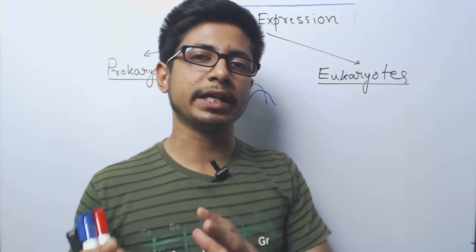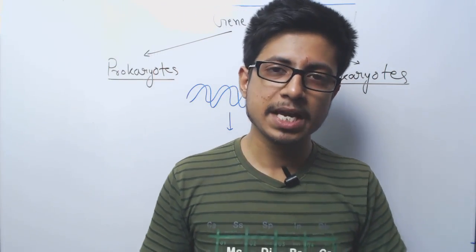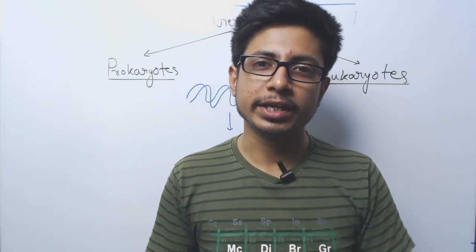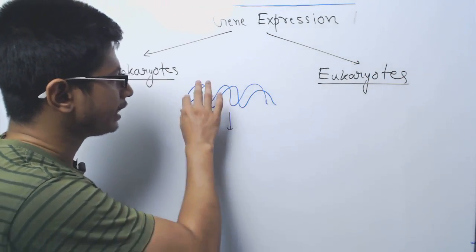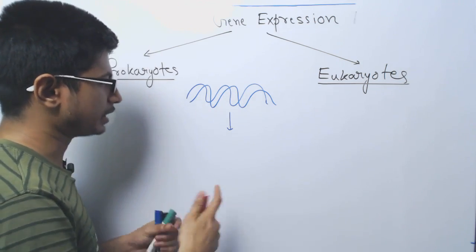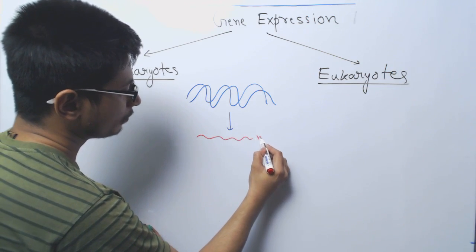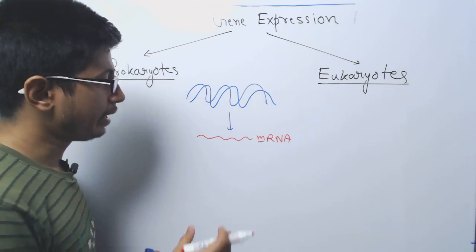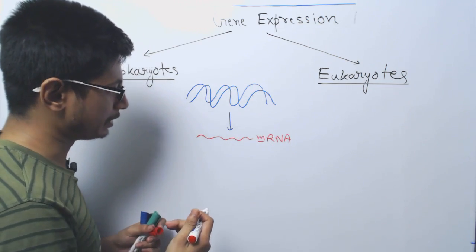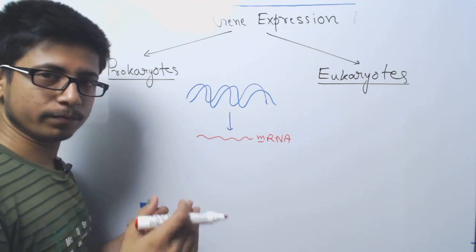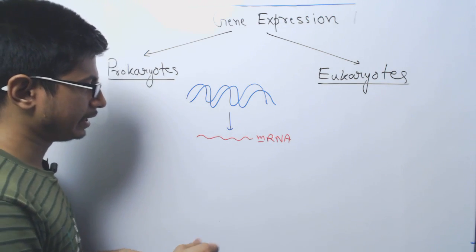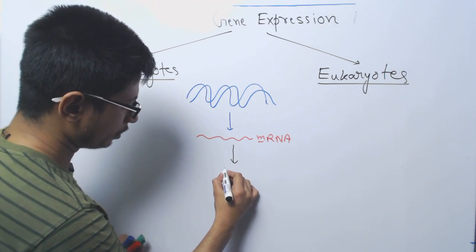To understand that, you need to know the general mode of gene expression. A gene is expressed when the DNA is transcribed into RNA and the RNA is translated into proteins. The DNA double helix contains all the information. Transcription produces the mRNA — the messenger RNA — which carries all the information that was present in the DNA and can move from place to place inside the cell.